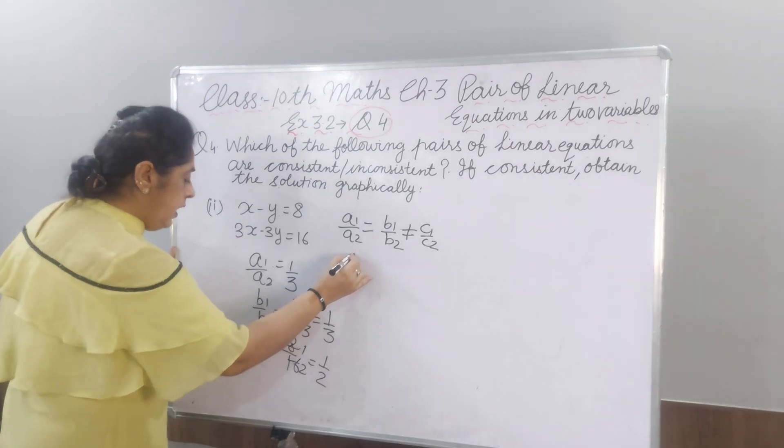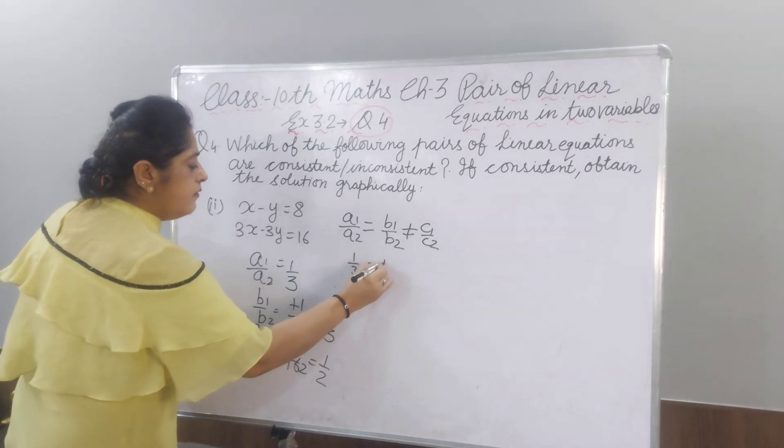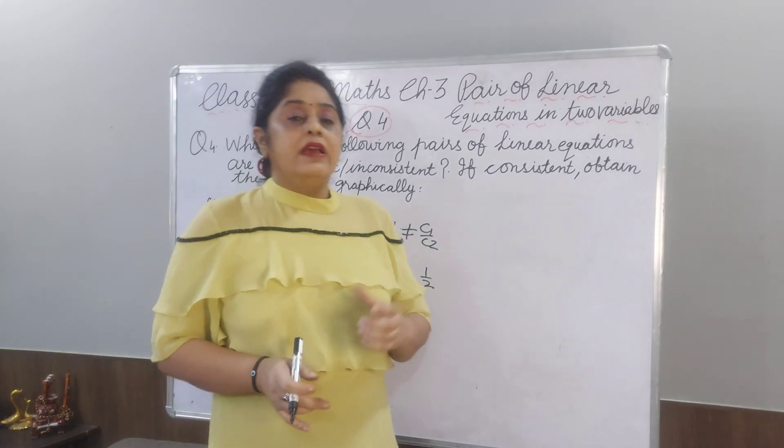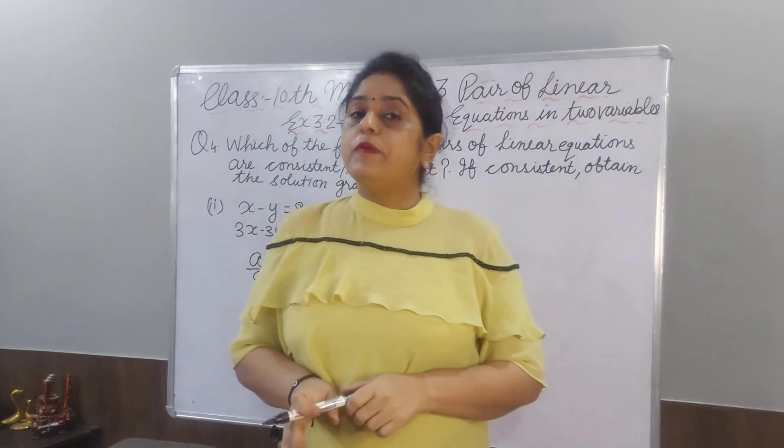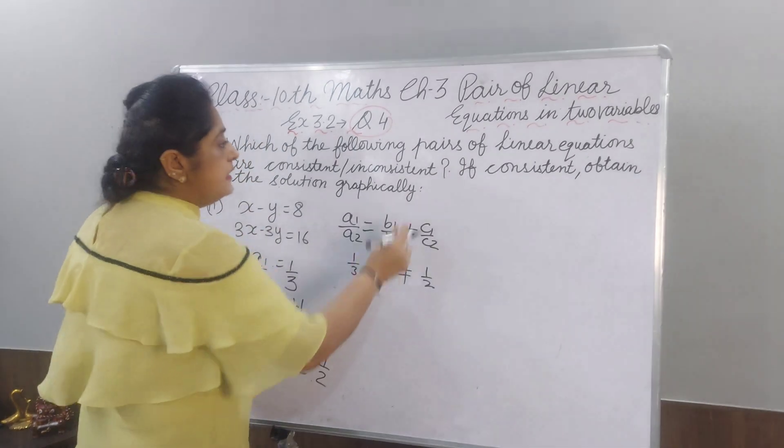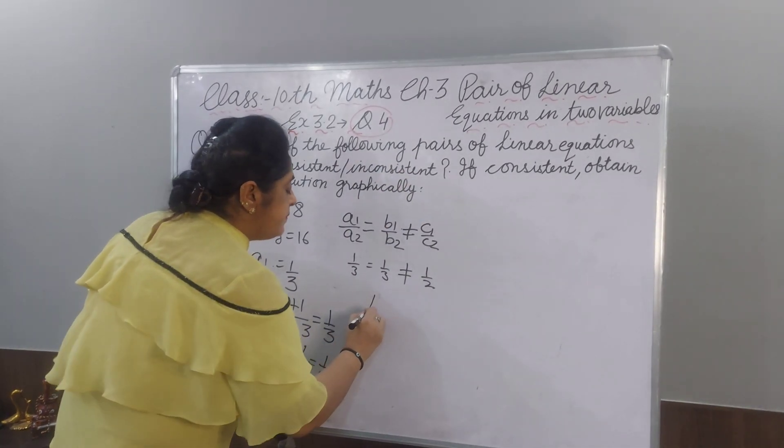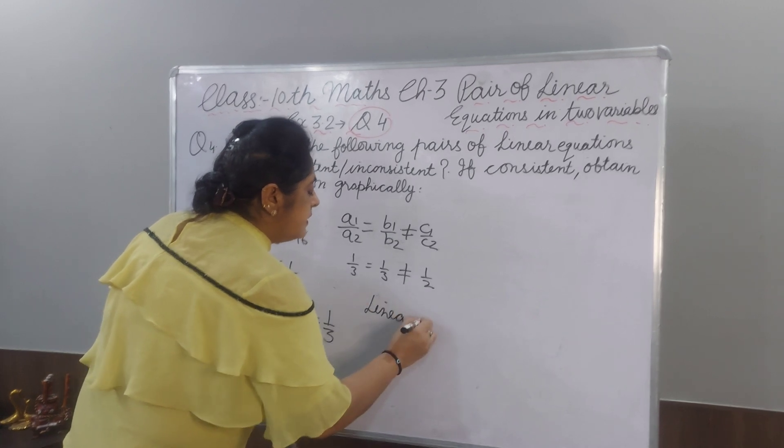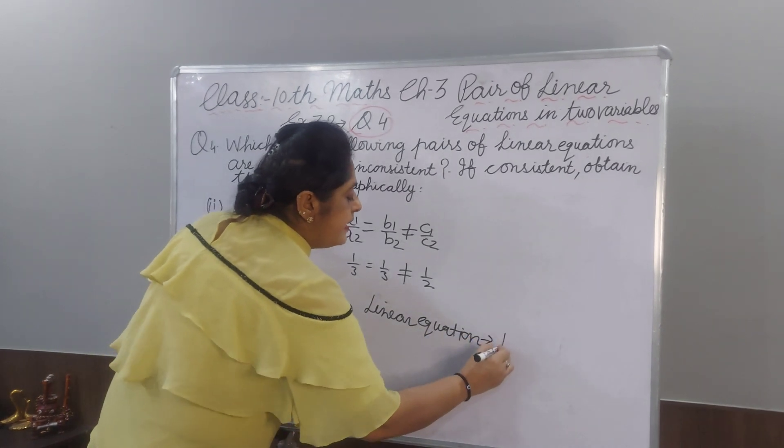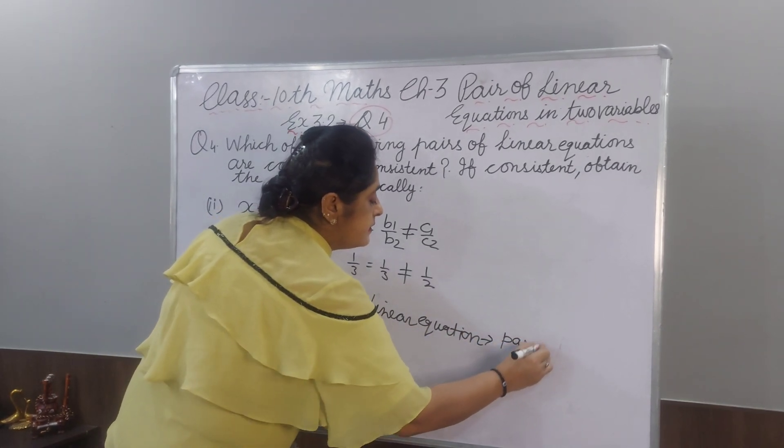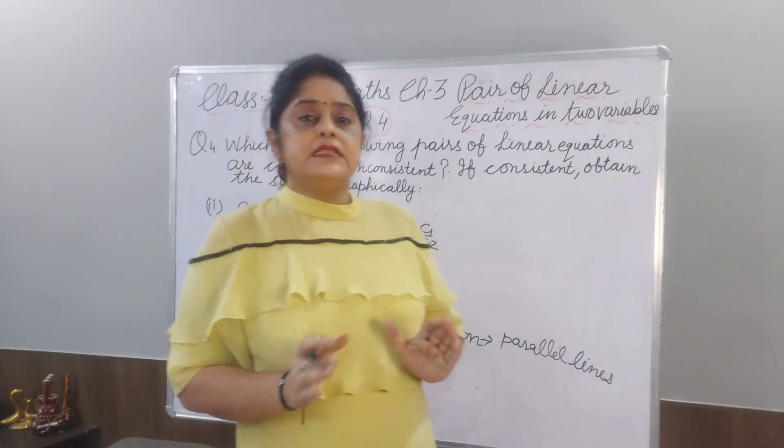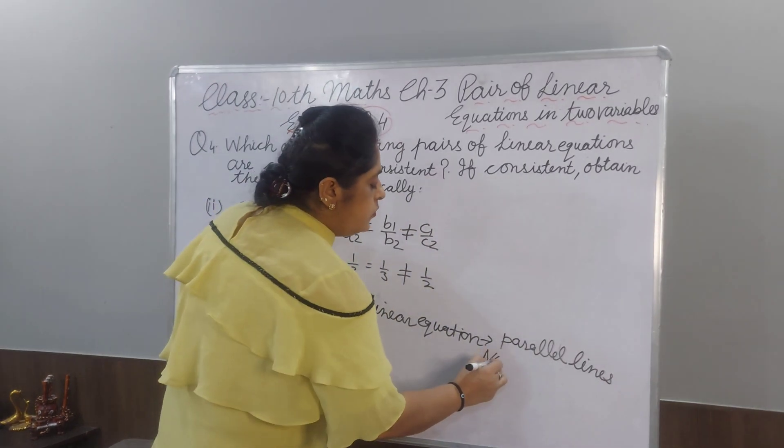Is it equal to B1 by B2 but not equal to C1 by C2. Because A1 and A2 both are 1 by 3. 1 by 3 which is not equal to 1 by 2. This type of condition, when A1 by A2 is equal to B1 by B2 but not equal to C1 by C2, then we get pair of parallel lines. Linear equation, we get as parallel lines. If they are parallel lines, there is no solution. You will get no solution.